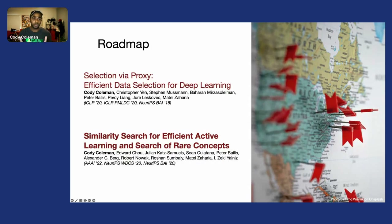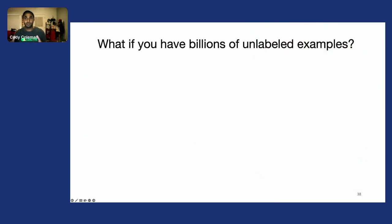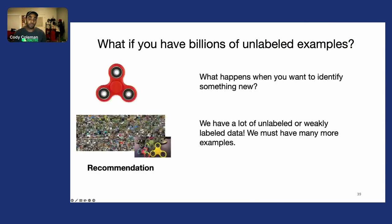Moving on to more recent work—Similarity Search for Efficient Active Learning and Search for Rare Concepts—this takes the idea of reducing computational bottlenecks to another degree. Let's imagine we're at a very large-scale company with tremendous amounts, like billions, of unlabeled examples.